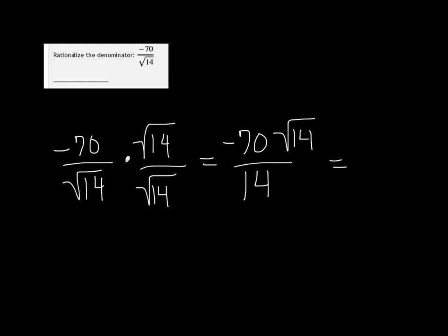And then make sure that you simplify — 70 and 14 can both be divided by 2. So we get negative 35 over 7, and we know that that can be simplified to just negative 5 root 14.